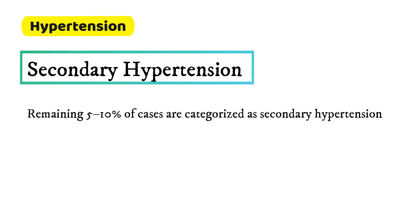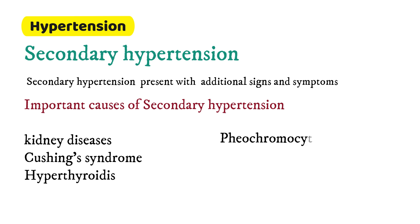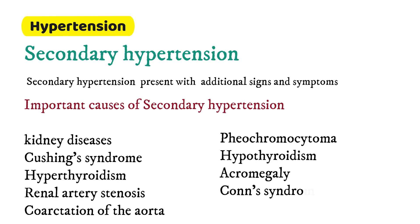The remaining five to ten percent of cases are secondary hypertension, defined as hypertension due to identifiable causes. These present with additional signs and symptoms. Important causes include kidney diseases, Cushing's syndrome, hyperthyroidism, renal artery stenosis, coarctation of the aorta, pheochromocytoma, hypothyroidism, acromegaly, Conn's syndrome, and hyperparathyroidism.